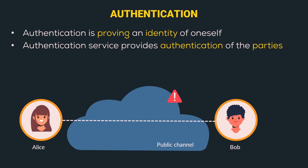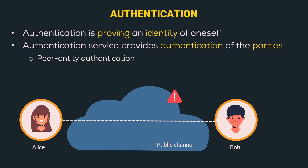In the Authentication service, we have two types. The first is Peer Entity Authentication, where the service provides authentication of both the sender and the receiver. The next is Data Origin Authentication — here the service only provides authentication of the origin, i.e., the sender. That was all about Authentication.